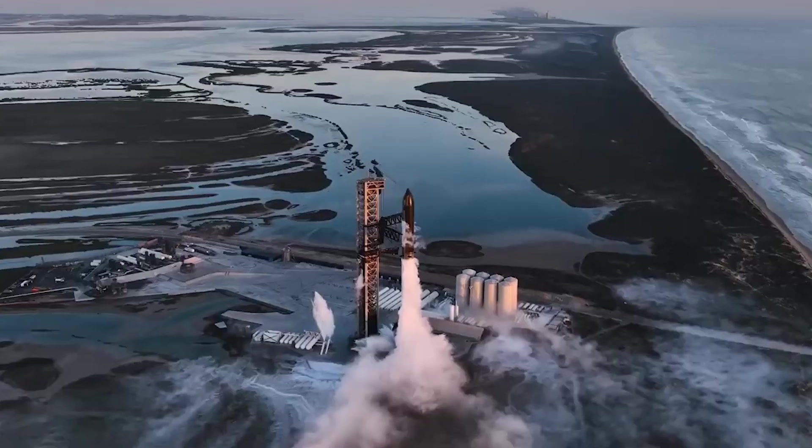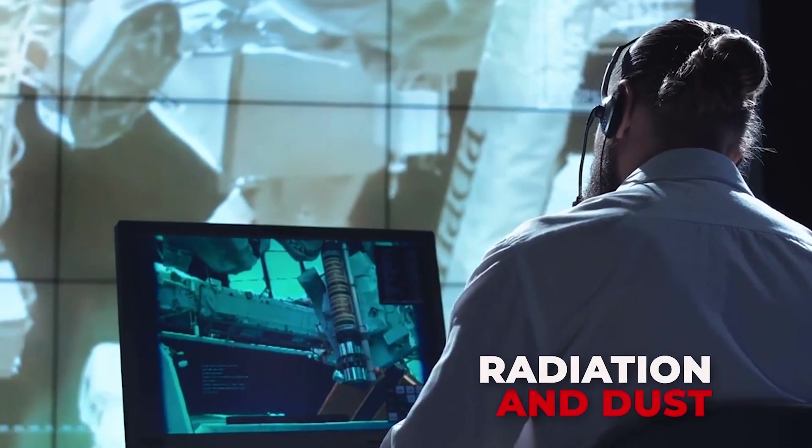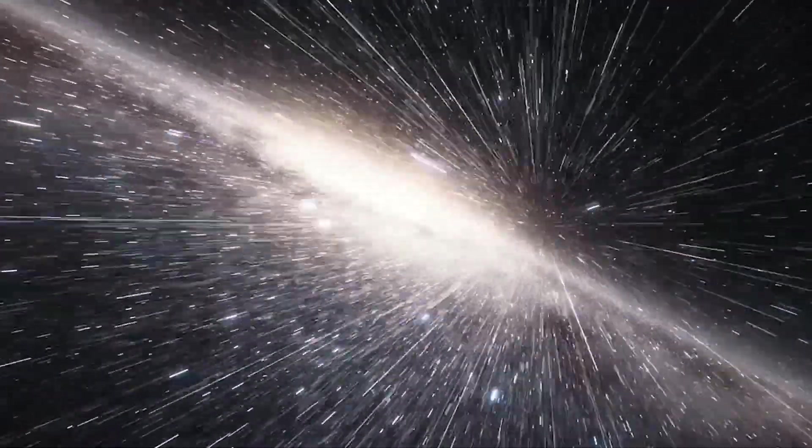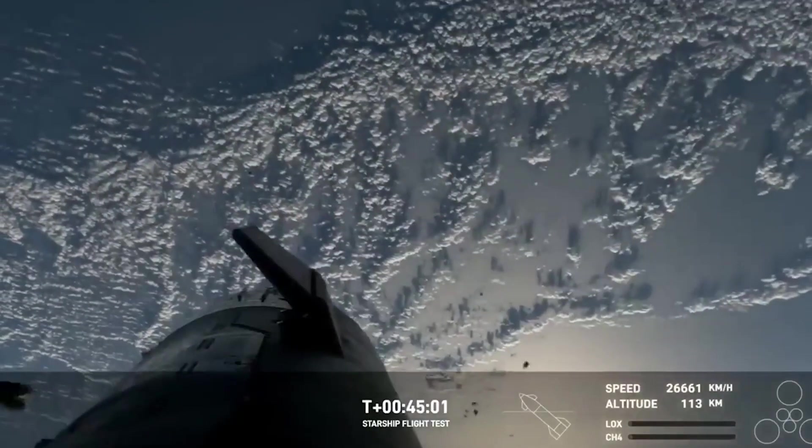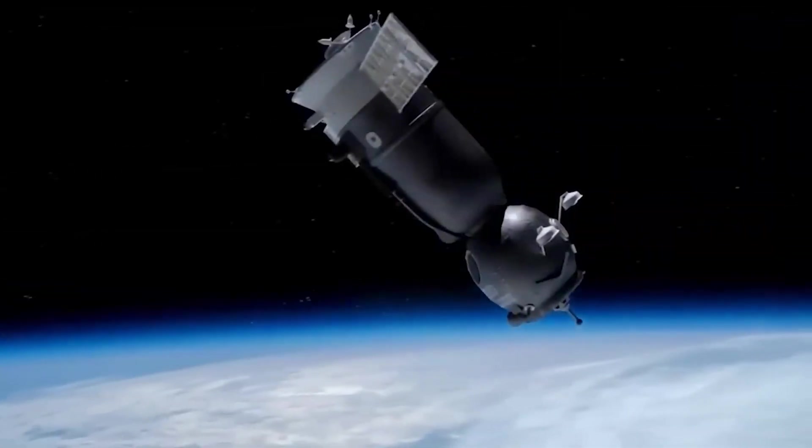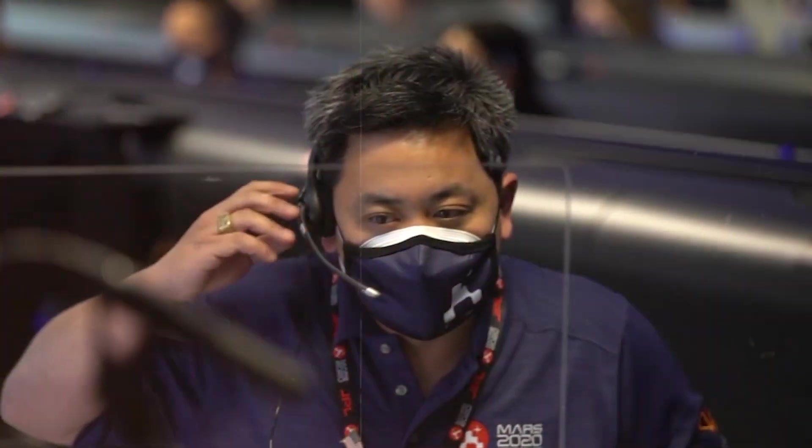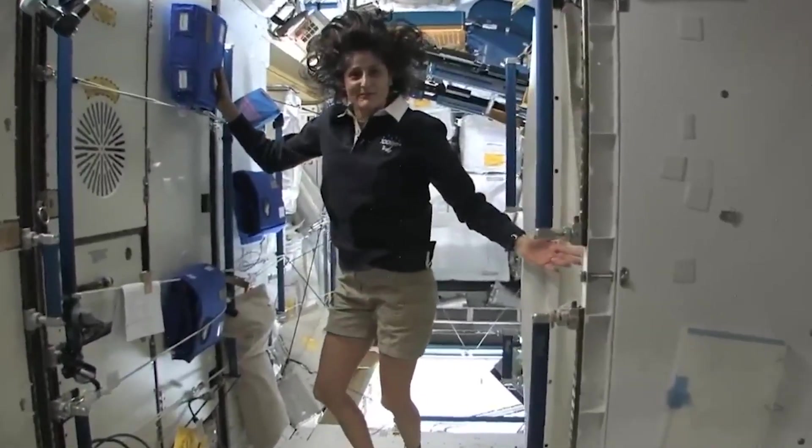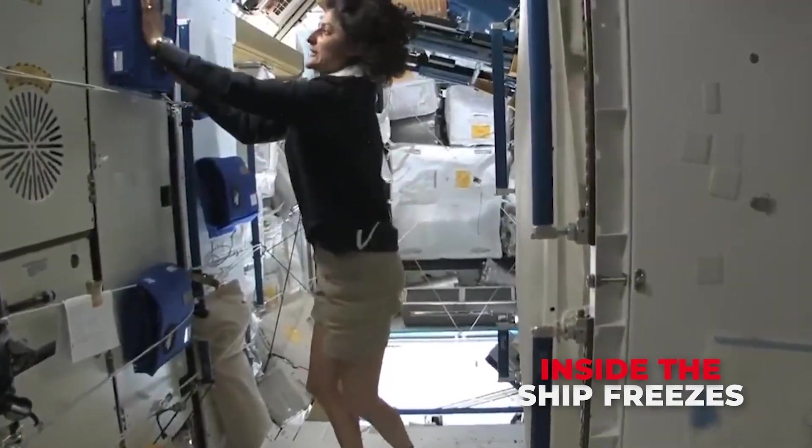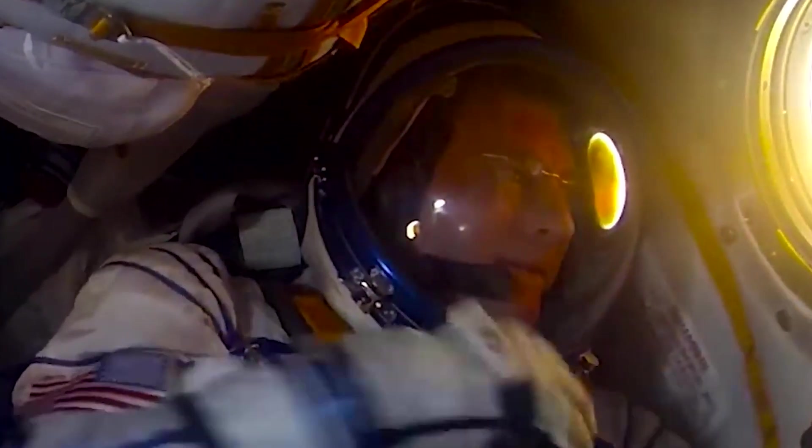But let's go further. Suppose we have perfect shielding, a flawless ship, and technology to handle radiation and dust. We reach light speed. What now? At that instant, from our point of view, something extraordinary happens. Time outside the ship stops. The universe freezes. To an observer watching from Earth though, the opposite occurs. Time inside the ship freezes. You become a beam of light, moving but unaging, frozen in motion.